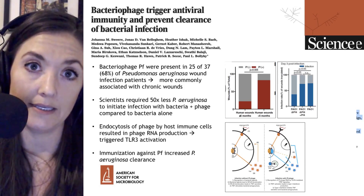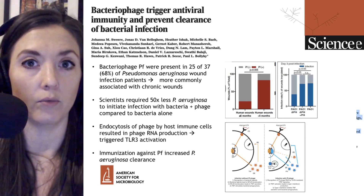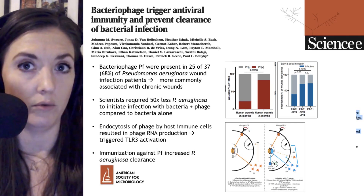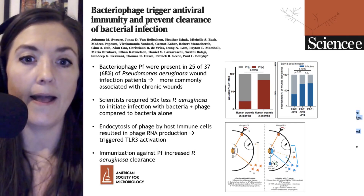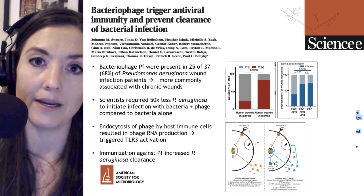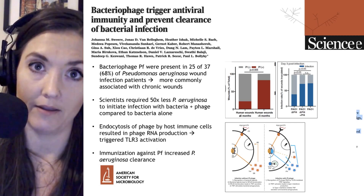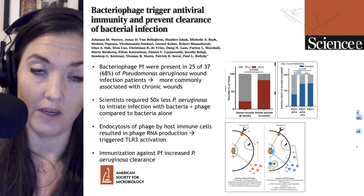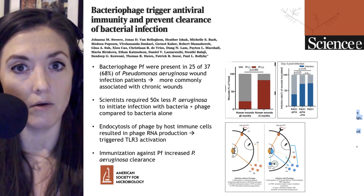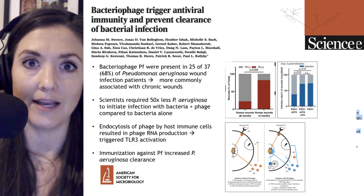To recapitulate this in mice, scientists added Pseudomonas aeruginosa to cause a wound, and they found that they required 50 times fewer bacteria when the bacteria also had the bacteriophage than if they infected with the bacteria alone, as you can see in the blue bar graph on the right-hand side.